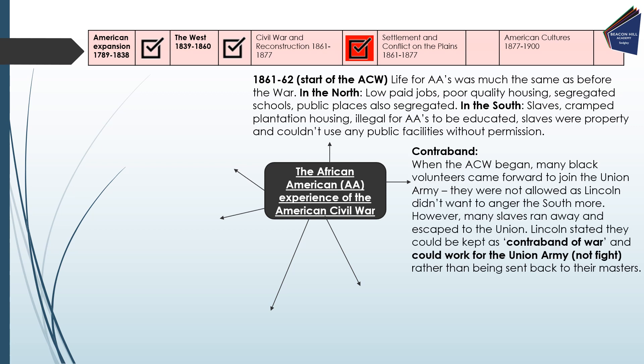When the American Civil War began, many black volunteers came forward to join the Union army but were not allowed initially, as Lincoln didn't want to anger the South further — his aim was to get the Union back together. However, many slaves were running away and escaping to the Union, seeing it as a place of hope. Lincoln stated that they could be kept as contraband of war and could work for the Union army, but not fight, rather than being sent back to their masters.